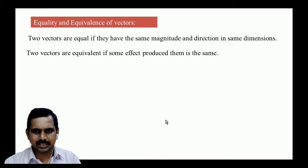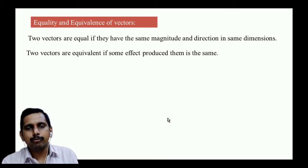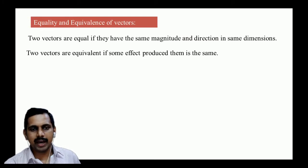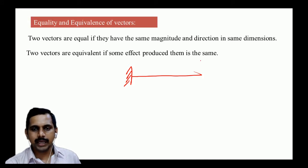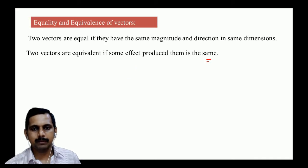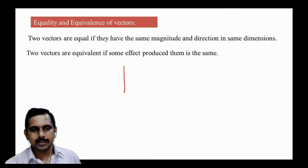For example, a force P acting at a point on a cantilever beam can be replaced by a moment vector M, where M equals r cross P. This replacement produces the same effect on the structure, illustrating the concept of equivalence.